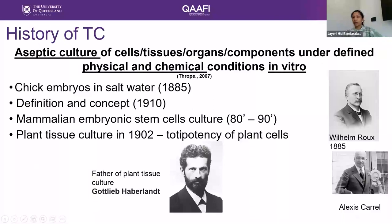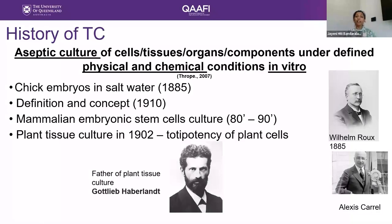If you look at the history of tissue culture, it really started in 1885 by Wilhelm Roux, looking at animal cells — how to culture animal cells in salt water. The tissue culture concept really developed in 1910, again by animal scientist Alexis Carrel. Then from the 1980s to 1990s, people were looking at growing mammalian embryonic stem cells. Plant tissue culture really originated in 1902 with the concept of totipotency of the plant cells, and we consider Gottlieb Haberlandt as the father of plant tissue culture.